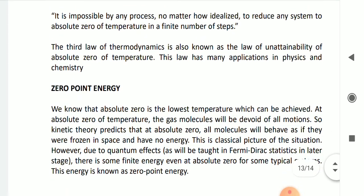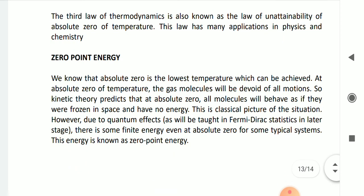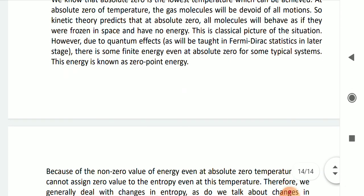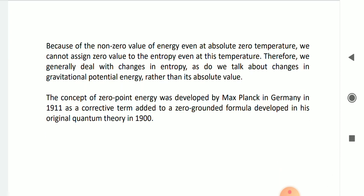So it is impossible, no matter how idealized, to reduce any system to absolute zero. Zero point energy is where all motions cease, where kinetic energy of every molecule becomes zero, which is not possible. This zero point energy can be obtained only at absolute zero. Thank you very much.